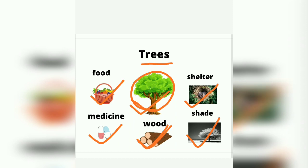Trees give us shelter. Animals and birds make their nests in trees. Some animals live in trees, like monkeys and squirrels. They make their shelter in trees.